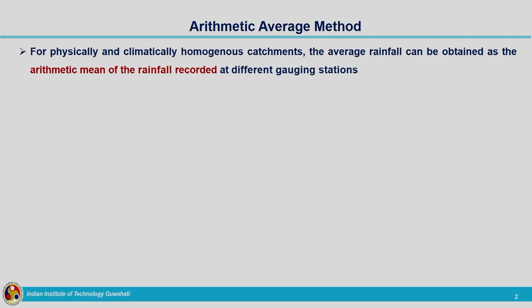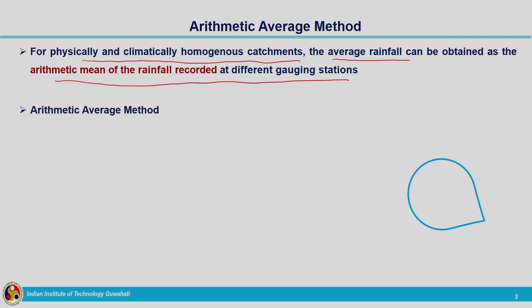The first method is the arithmetic average method. This will give fairly good results in the case of physically and climatically homogeneous catchments. We calculate the average rainfall using the arithmetic mean of the rainfall recorded at different gauging stations. We are having an area within which there are n number of rain gauges, and we find the average of the rainfall data recorded at these rain gauges. Here is a representative picture of the catchment with its stream network.